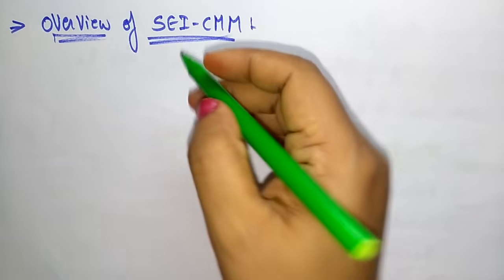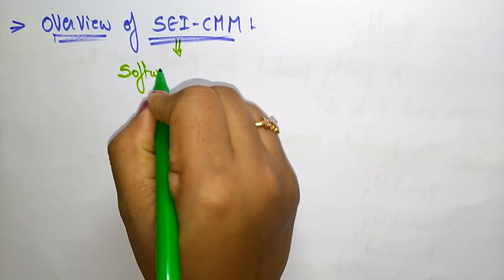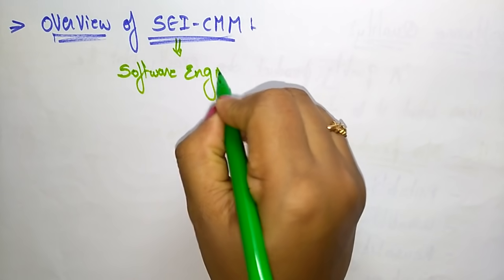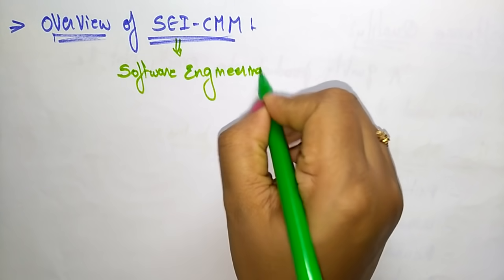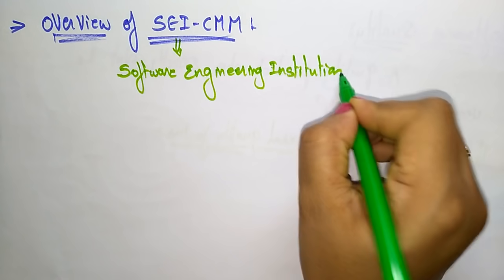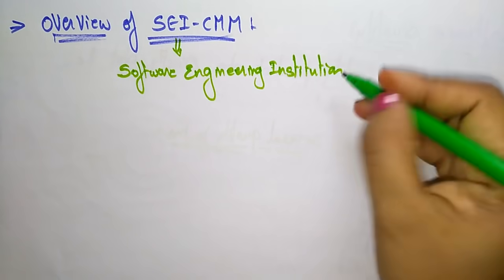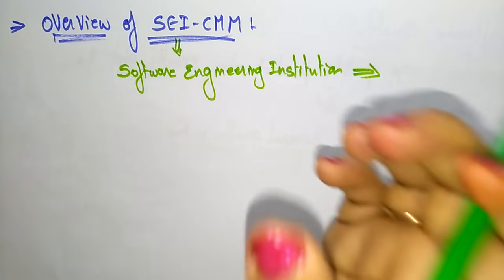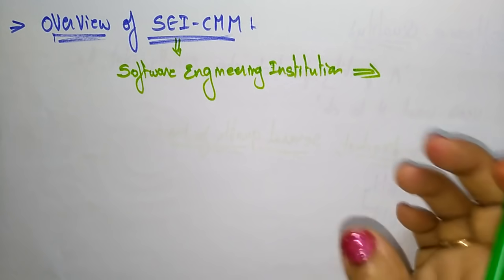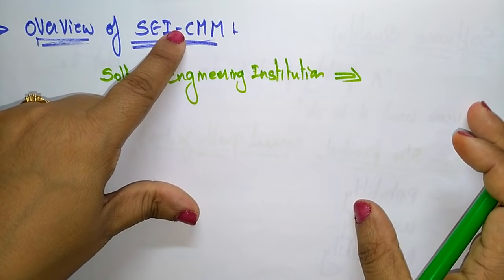SEI stands for Software Engineering Institution. So the Software Engineering Institution developed a standard that you call CMM.